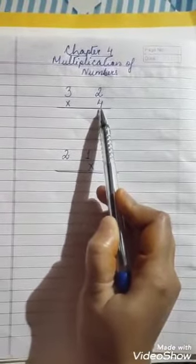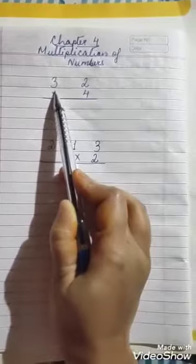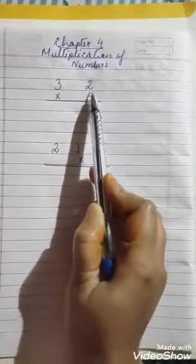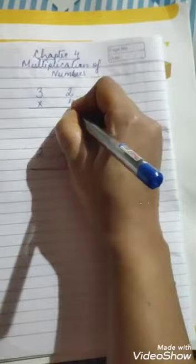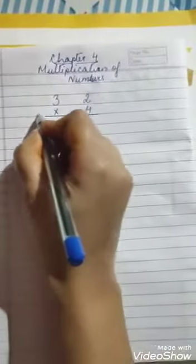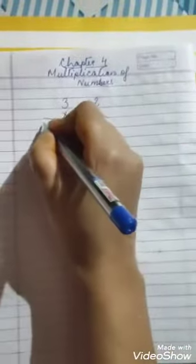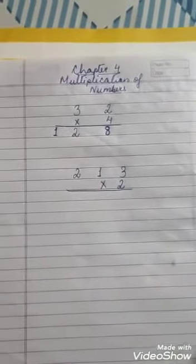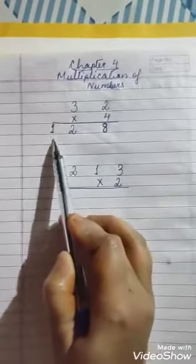First, we will multiply 4 into 2, then 4 into 3. So, 4 twos are 8 — we write 8 in the ones place. Next, 4 threes are 12. We write 2 in the tens place and carry 1 to the hundreds place. So the answer is 128. That means 32 multiplied by 4 equals 128.